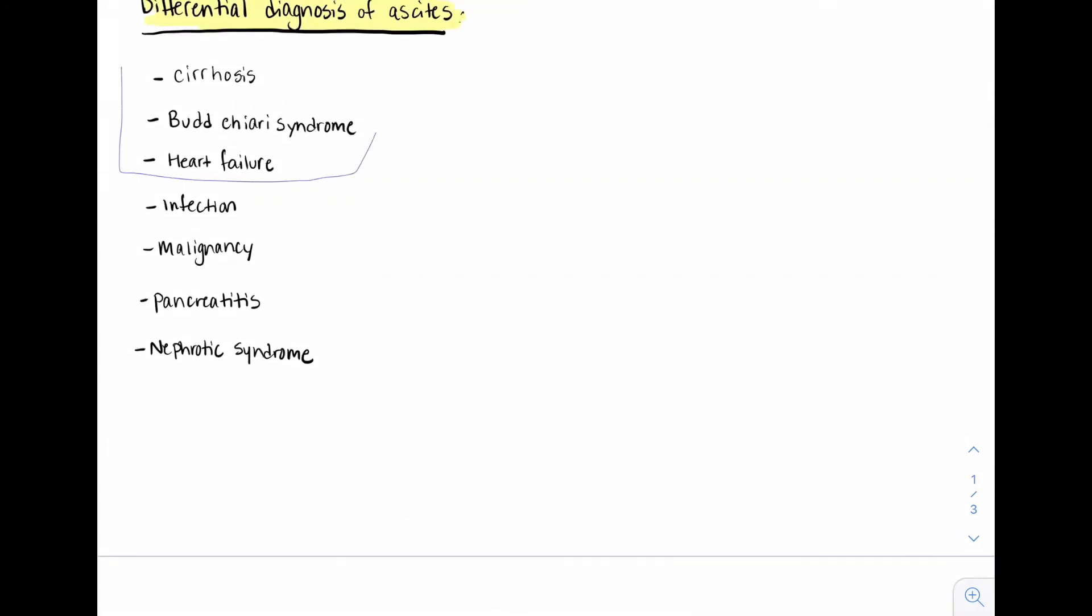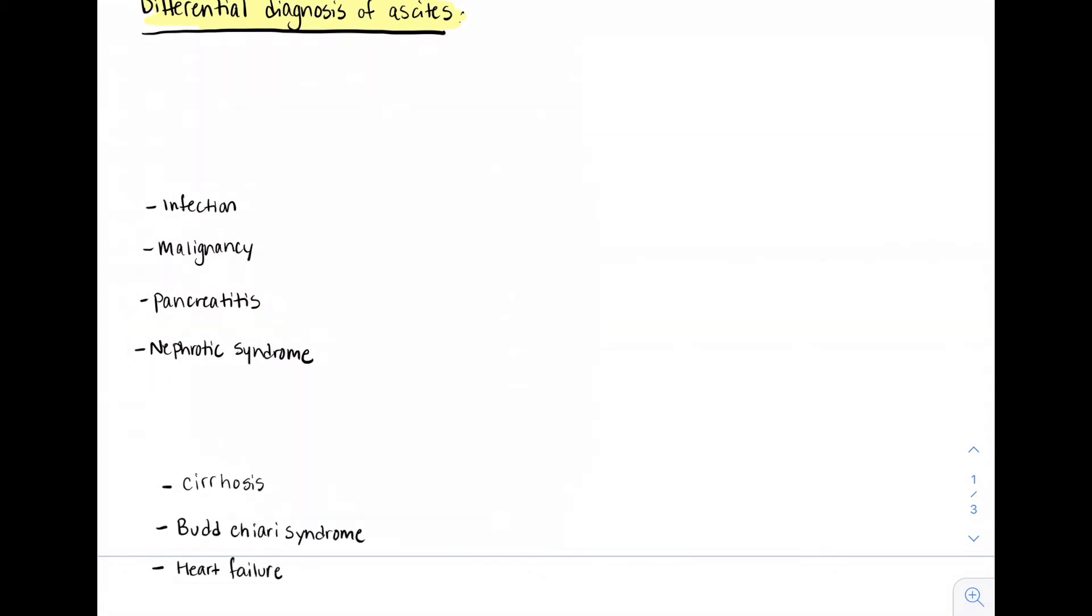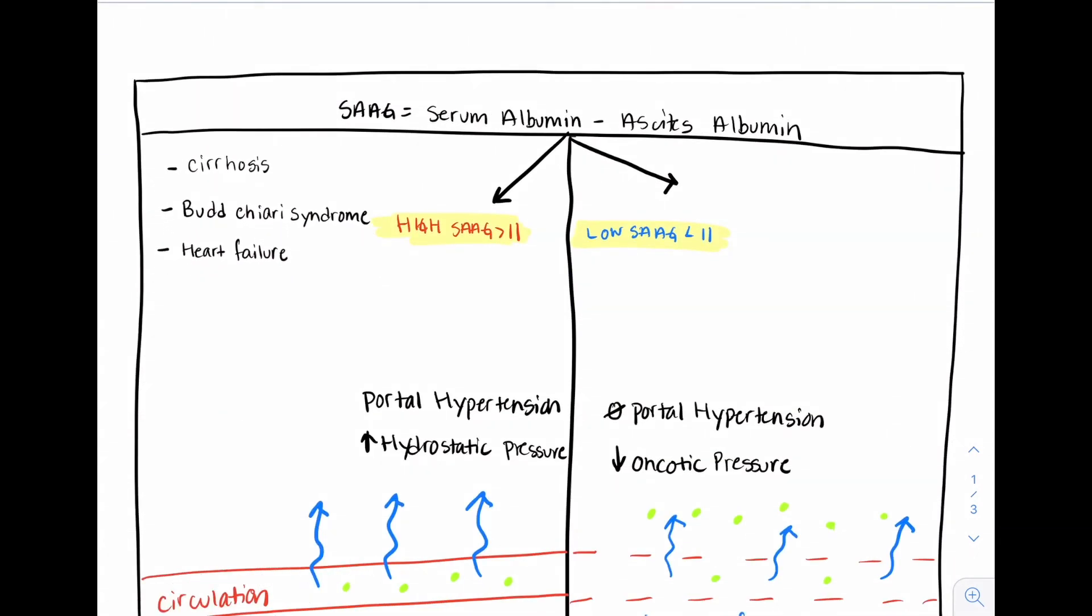A high serum ascites albumin gradient is caused most commonly by cirrhosis. Other causes include Budd-Chiari syndrome, which is occlusion of the hepatic vein, and heart failure, as well as others.